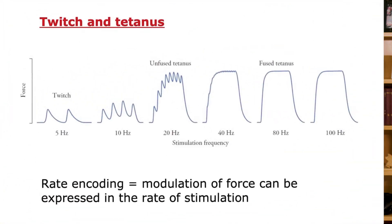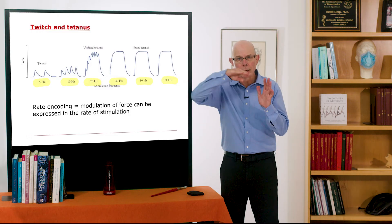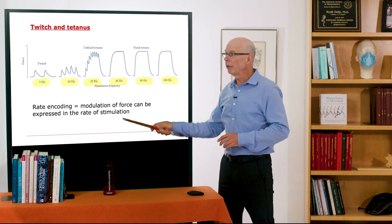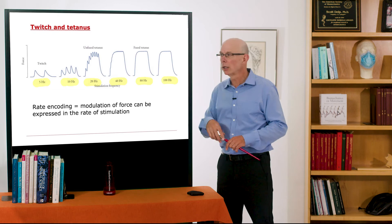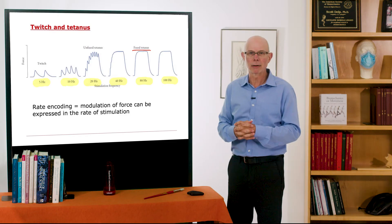Looking at twitch and tetanus: at low frequencies like 5 Hz you get low, twitchy force. At 10 and 20 Hz the force is wobbly. Above that, the force becomes smooth — that's called fused tetanus. We all get tetanus shots to prevent the disease of tetanus, where all muscles contract very intensely, which is obviously life-threatening.